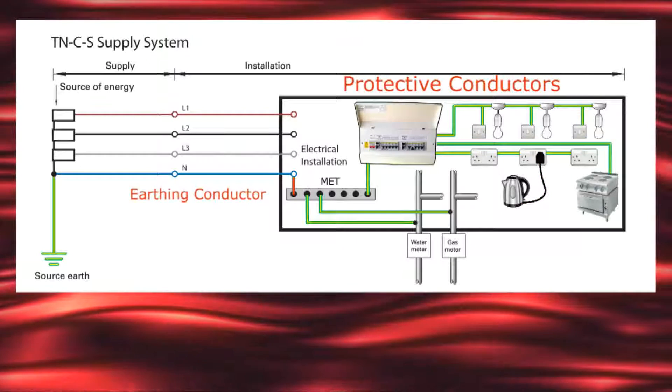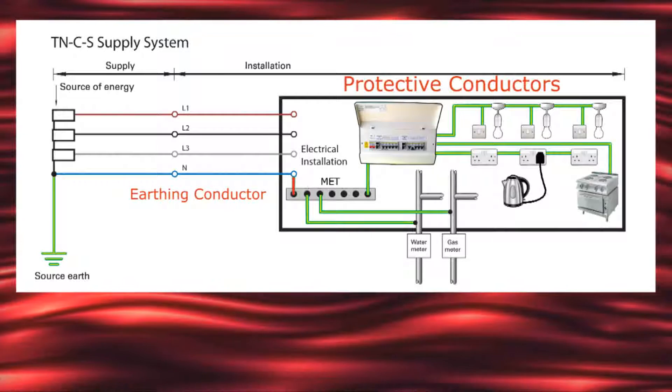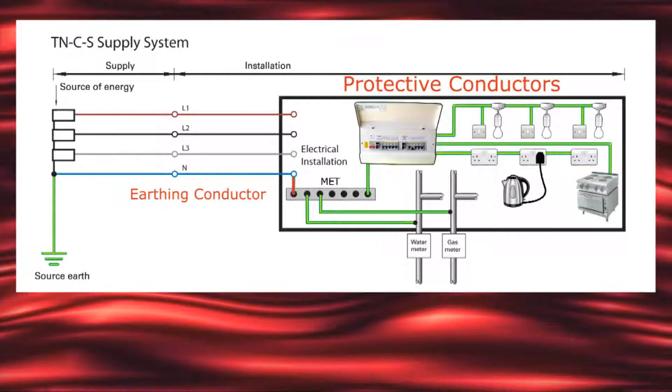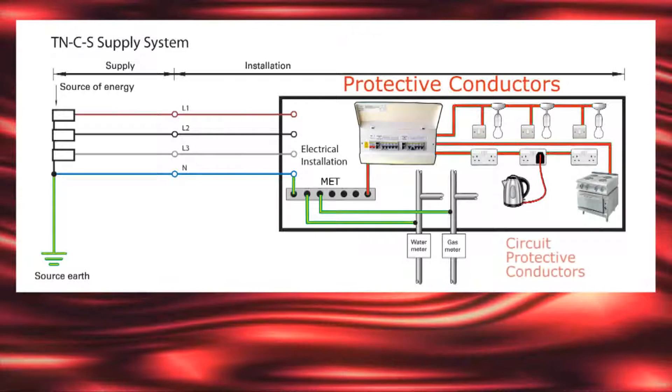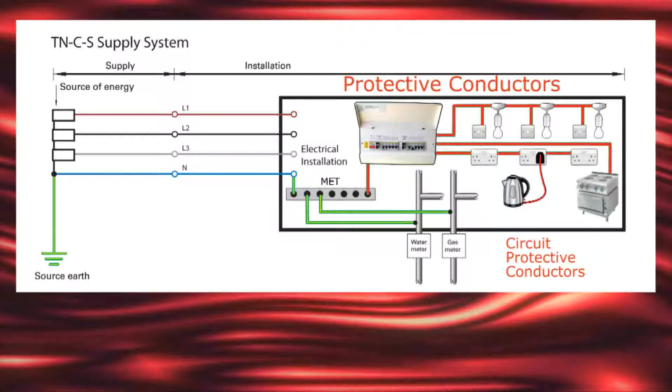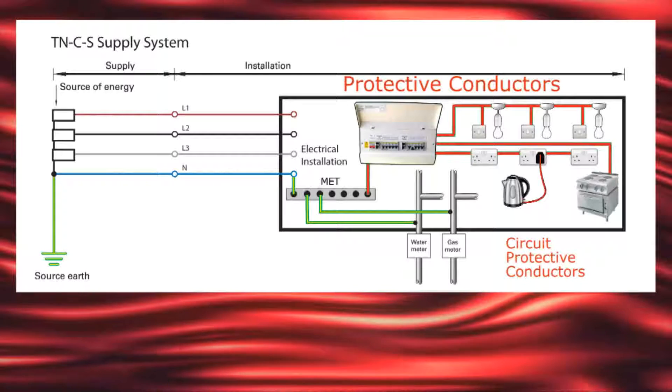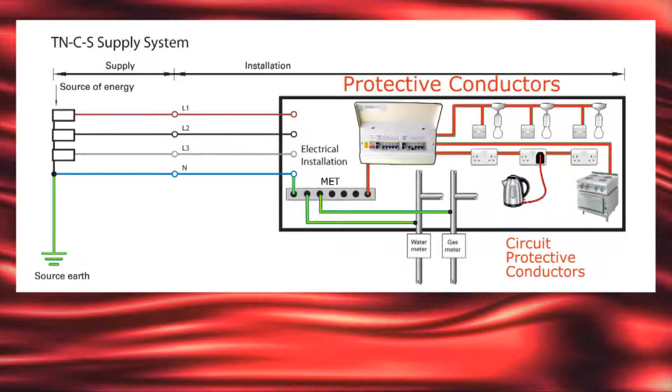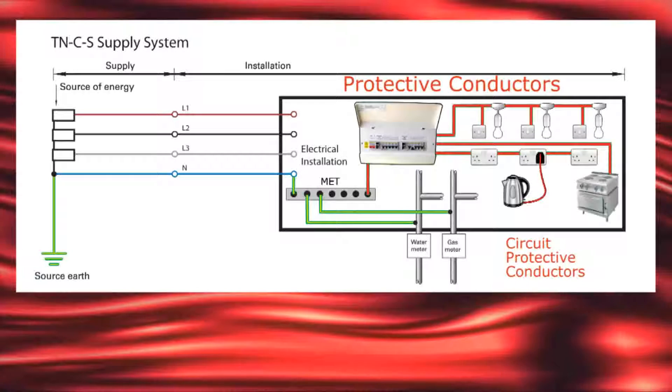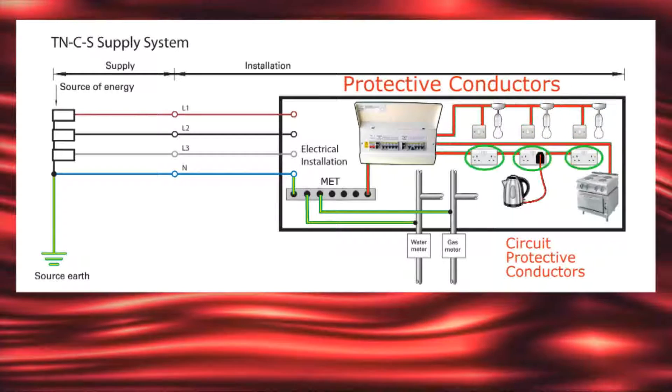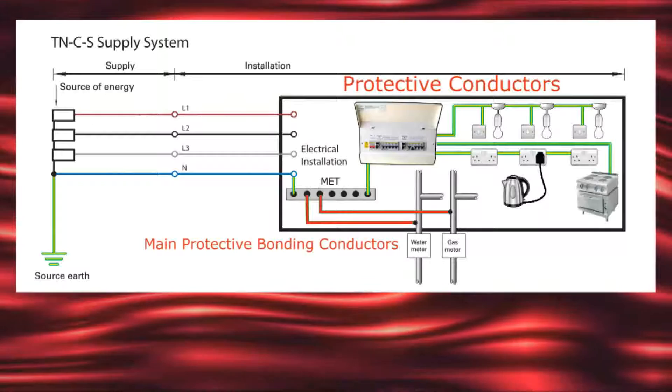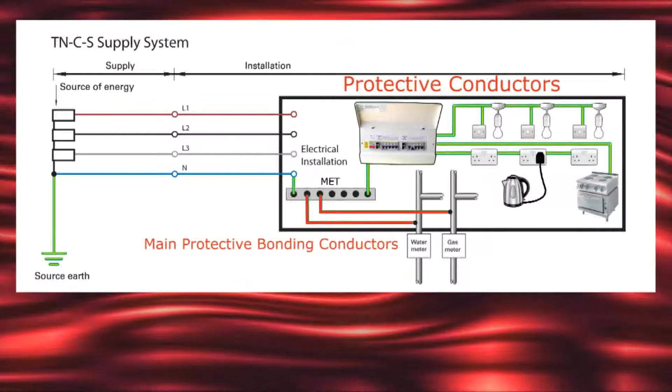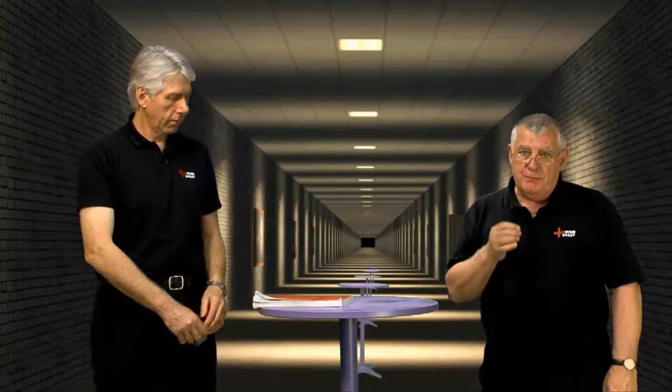There's an earthing conductor which connects between the incoming supply earth, which could be an earth electrode on a TT system, and the main earthing terminal or MET. All exposed conductive parts in the installation are connected to the MET using circuit protective conductors, CPCs. It's a requirement for CPCs to be run to and terminated at each point and accessory such as switches, ceiling roses, and socket outlets. Main protective bonding conductors connect extraneous conductive parts such as gas and water pipes to the main earthing terminal.